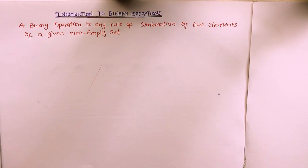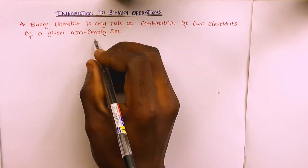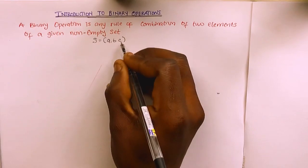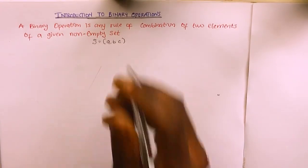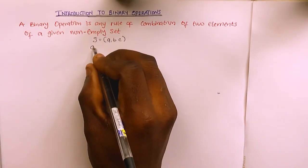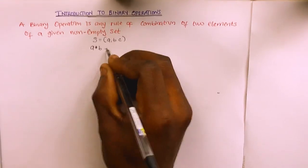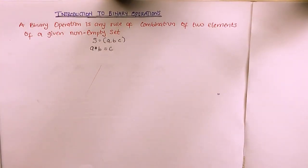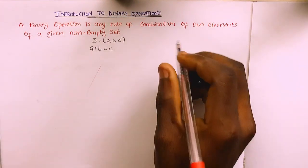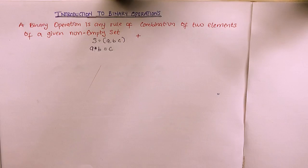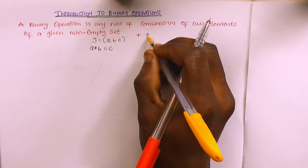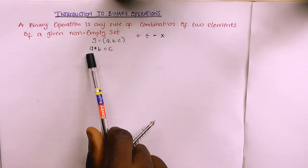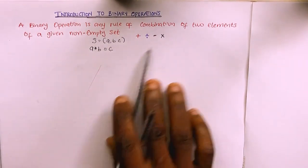Let's say you have set X which includes elements a, b, and c — all of these are elements while X is the set. A rule of combining, say a star b, equals c. That combination of two elements giving us c is called a binary operation. We are familiar with different operations: addition, division, subtraction, multiplication, and so on. The asterisk most times also denotes the multiplication sign.